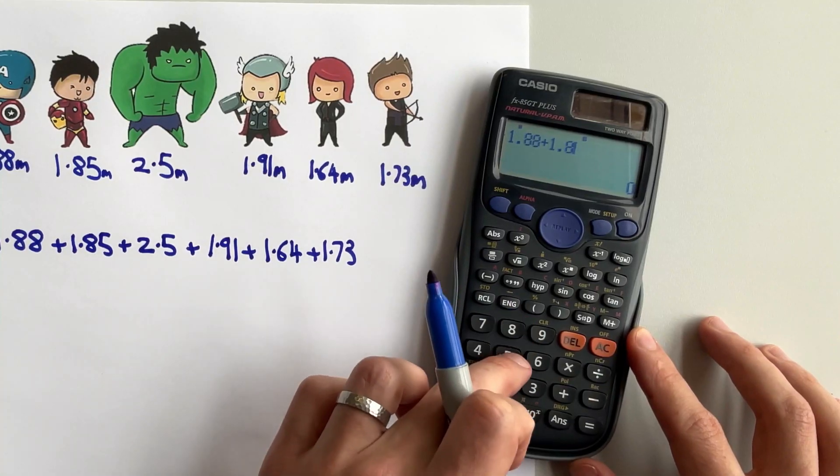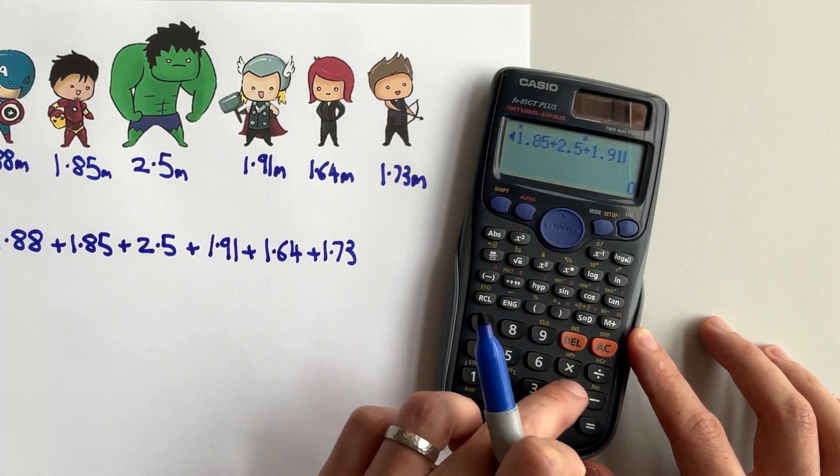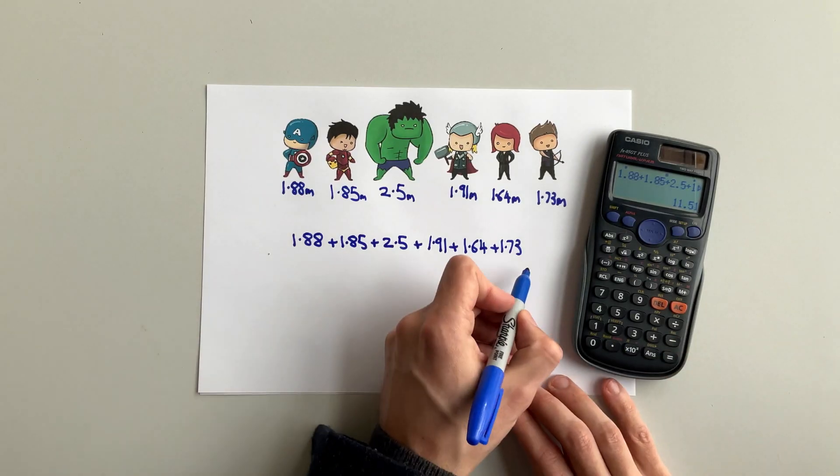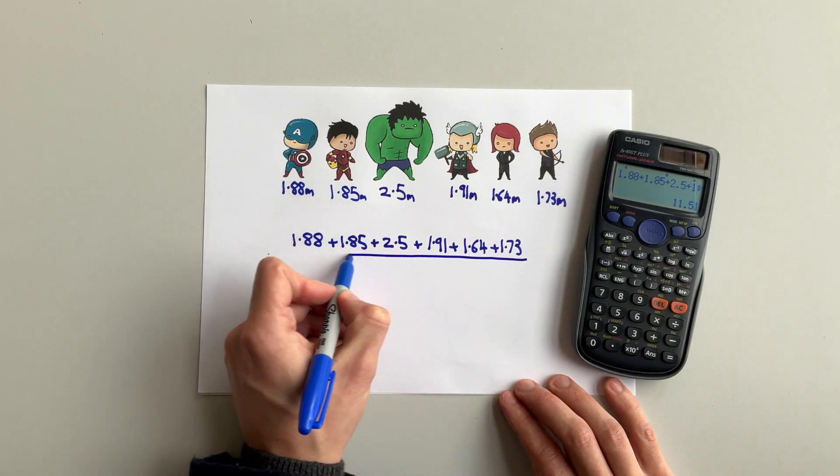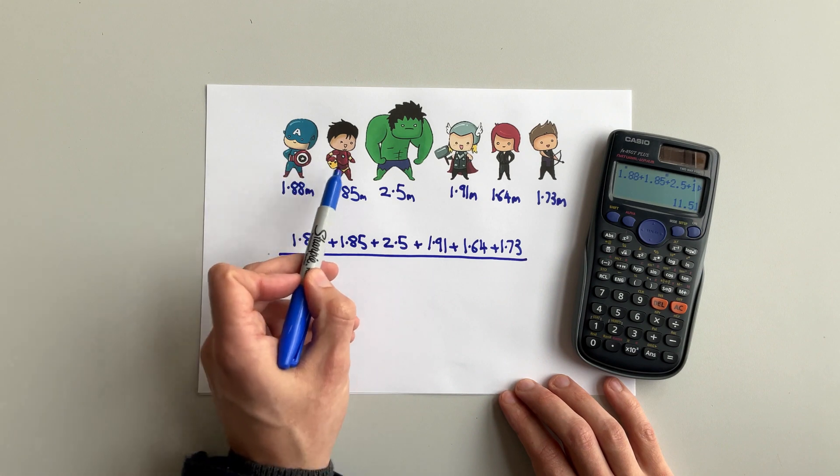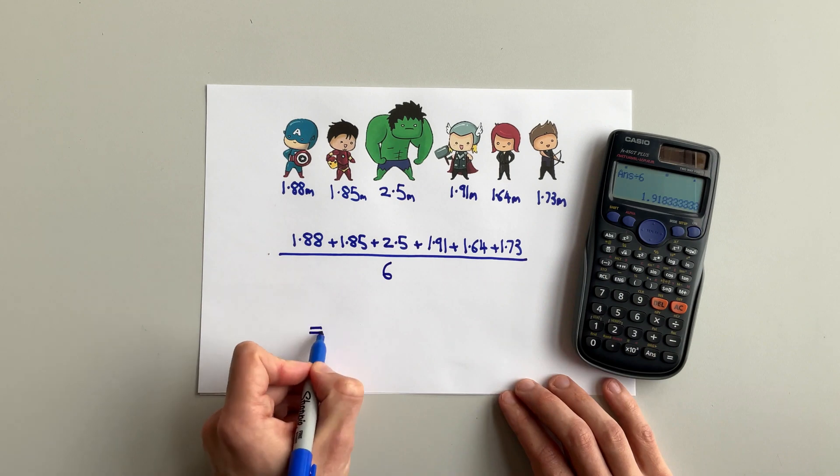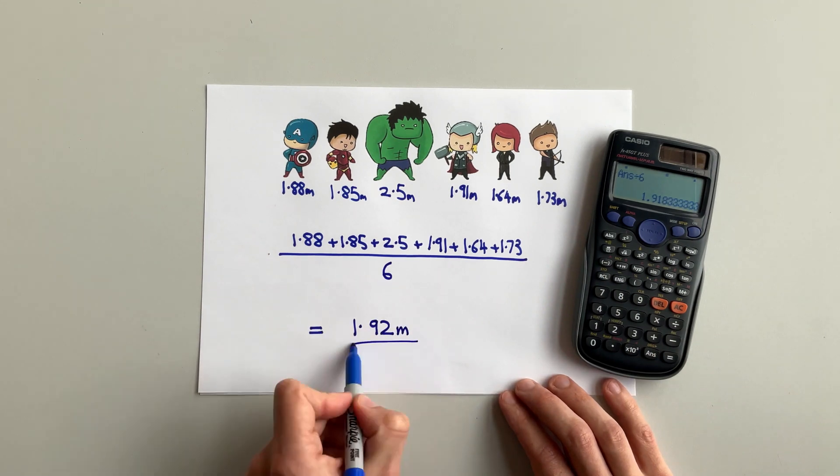Step one, add together all of those heights. The second step is to divide this number by how many Avengers there are. That's six. And when I do that, I get an average value of 1.91.